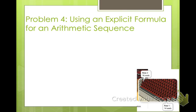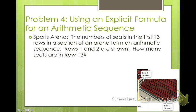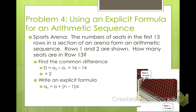And for our last one, we are going to use an explicit formula for an arithmetic sequence. There is a sports arena where the number of seats in the first 13 rows of a section form an arithmetic sequence. So they add a certain number of seats for every row. Rows 1 and 2 are shown. Row 1 has 14 seats, row 2 has 16 seats. How many seats are in row 13? So we are looking at the 13th row. We can find our common difference by taking 16 minus 14. So our common difference is 2. We put that into our formula. A sub 13 equals A sub 1 is 14, plus 13 minus 1 times our common difference of 2. 13 minus 1 is 12. 12 times 2 is 24. 14 plus 24 is 38. So in the 13th row there should be 38 seats.